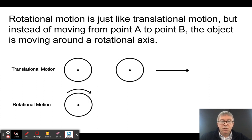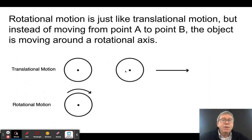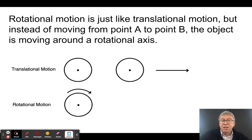Rotational motion, which is what we're going to be studying now, is very similar to what we have been studying, which we're now going to call translational motion. But instead of an object moving from point A to point B, the object is moving around a rotational axis. Everything is basically the same — in fact, everything is convertible from one form to another.